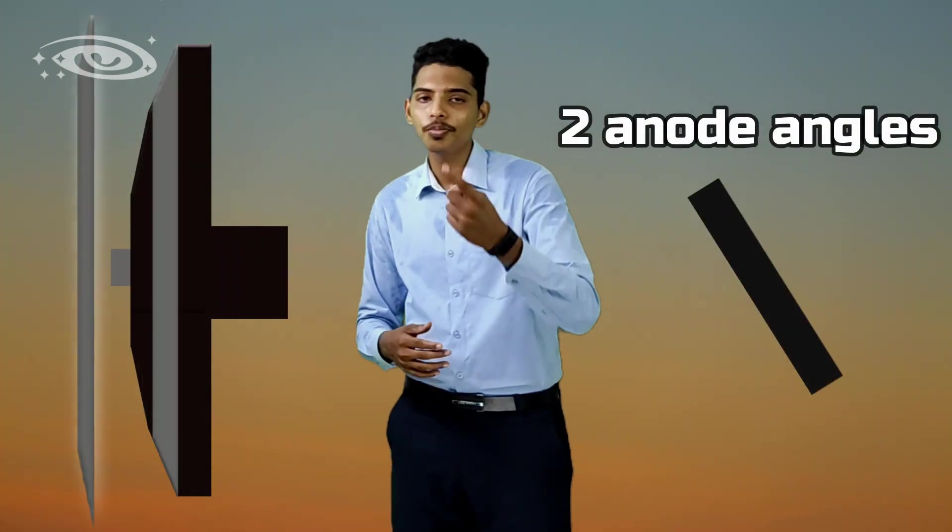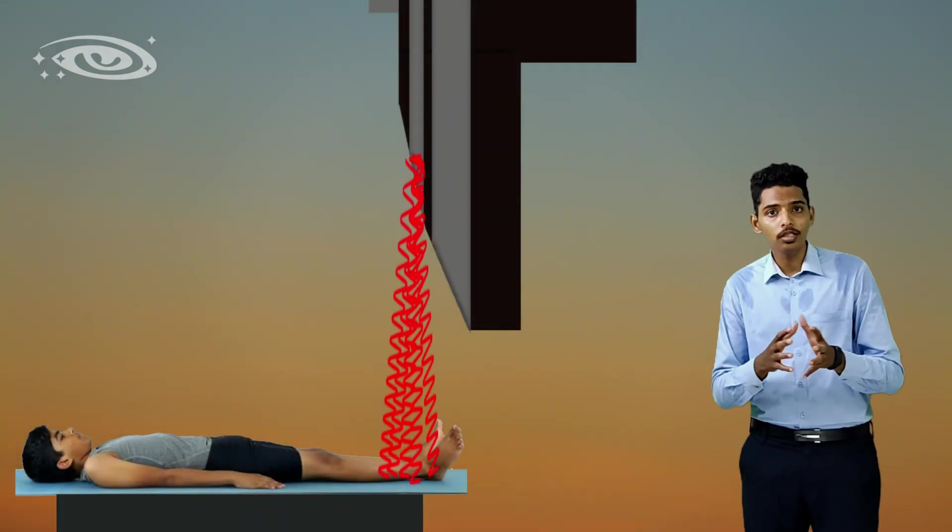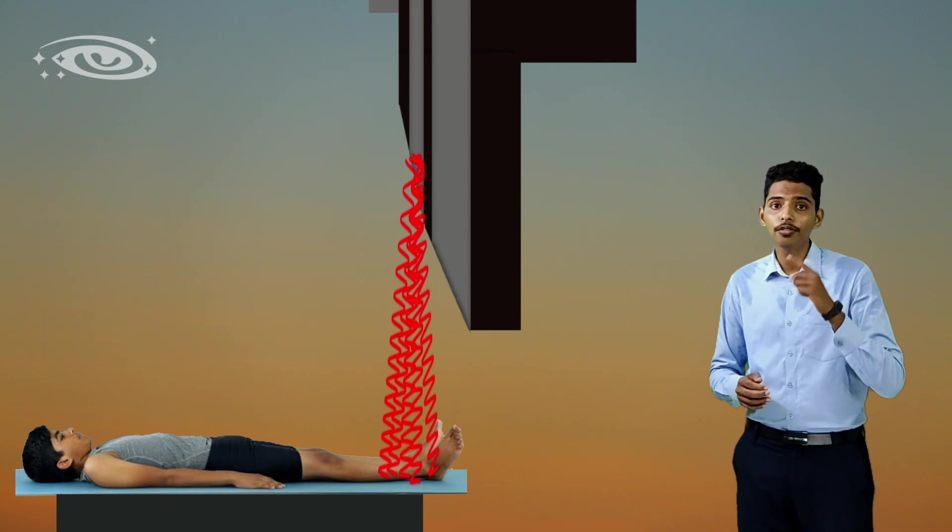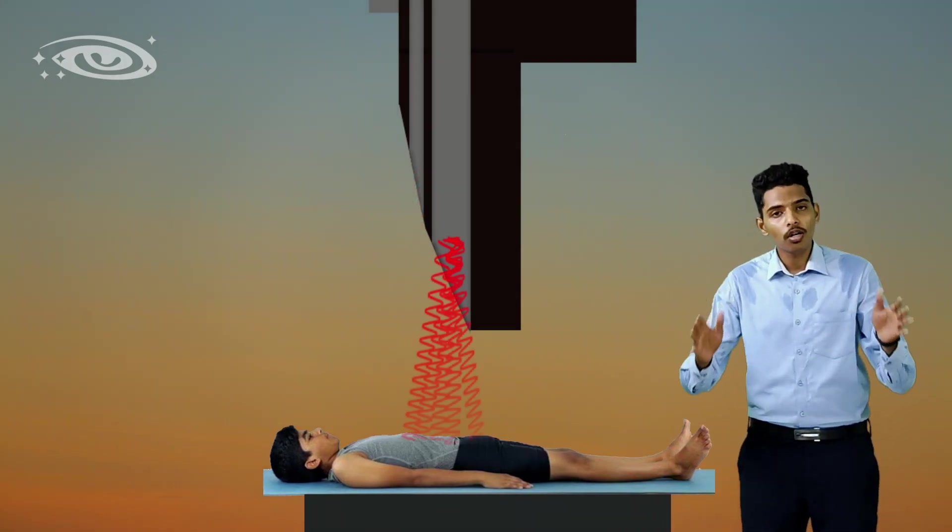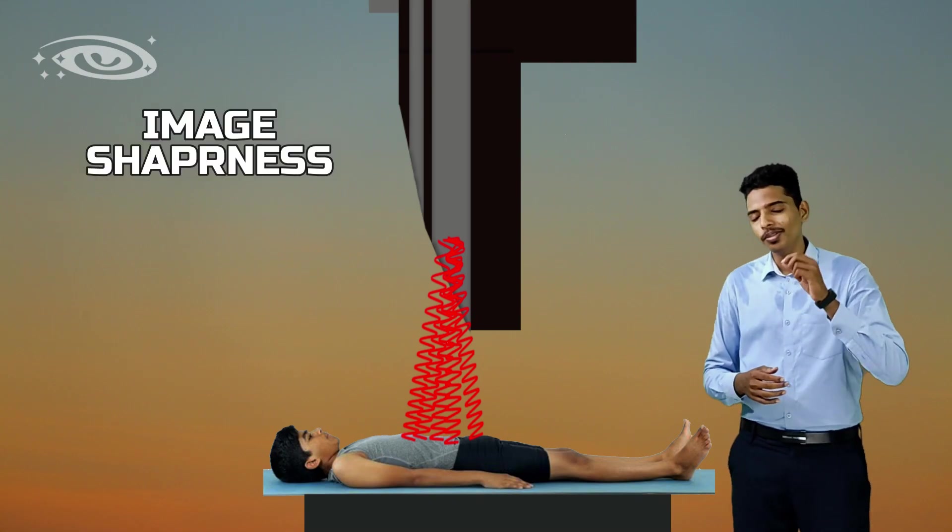Nowadays in most of the x-ray tubes, they are using two anode angles, one is small and one is large anode angle. So this small anode angle is used to take smaller regions, and also your sharpness of the x-ray image is going to be increased. But if you use larger anode angles, you can expose large regions, but your x-ray image sharpness is going to be somewhat reduced.